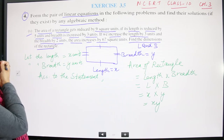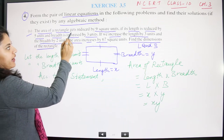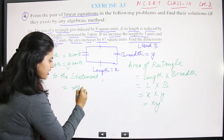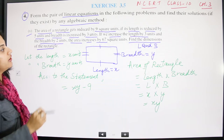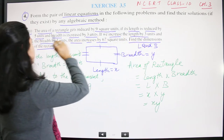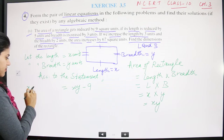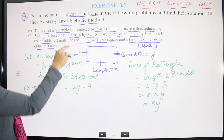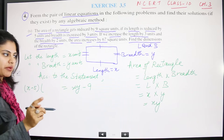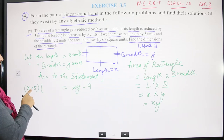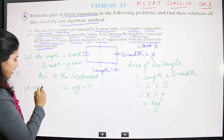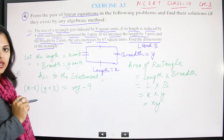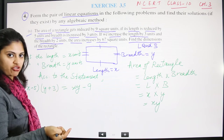According to the first statement, the area gets reduced by nine, so it becomes xy − 9. If its length is reduced by five, that's (x − 5), and breadth is increased by three, that's (y + 3). So Equation 1 is: (x − 5)(y + 3) = xy − 9.